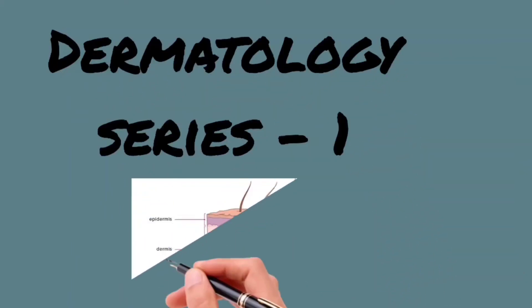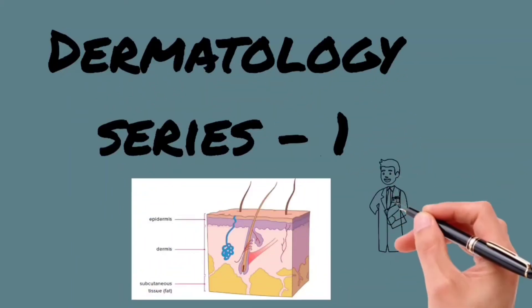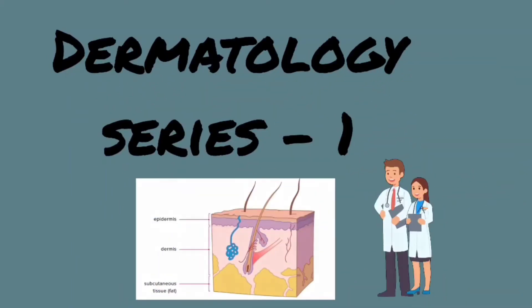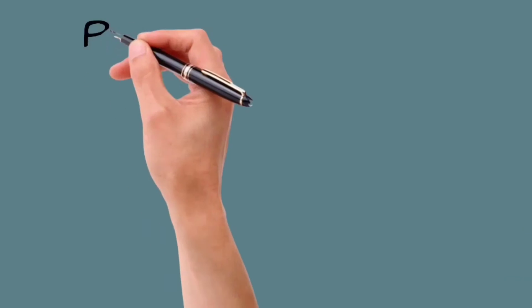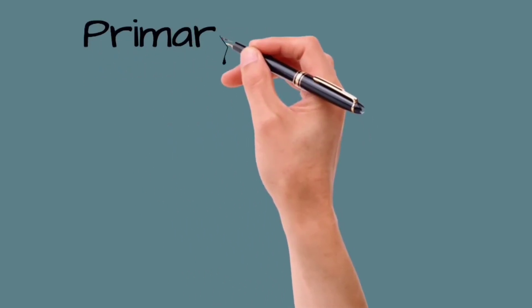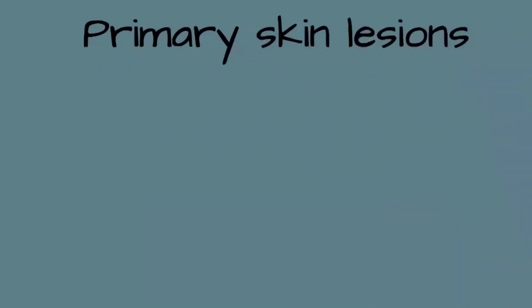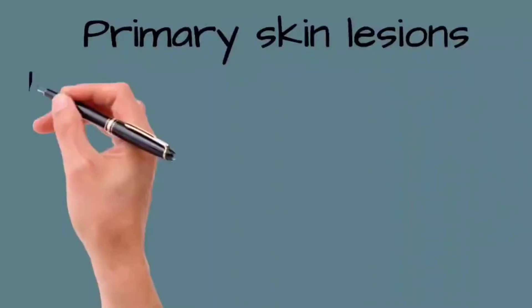Welcome to the Dermatology Lecture Series. The initial lesions of a disease are called primary lesions. These lesions are often modified by scratch marks, ulcers, and other events called secondary changes.